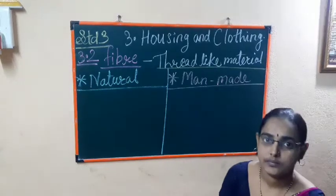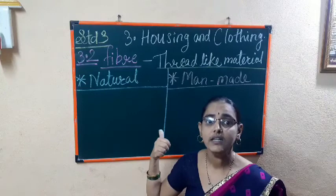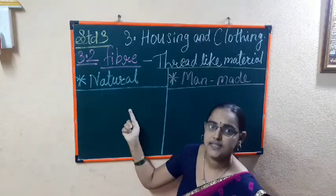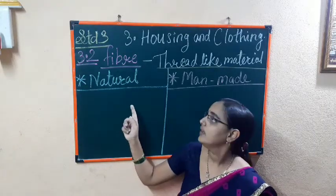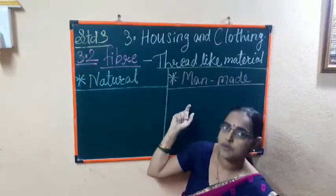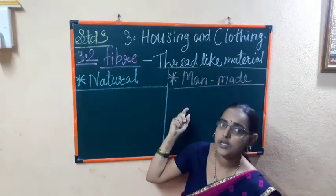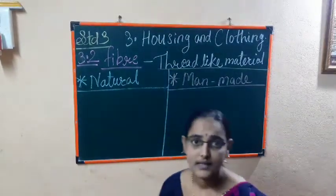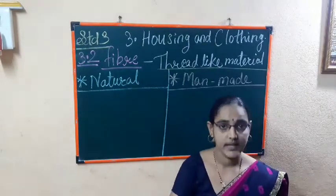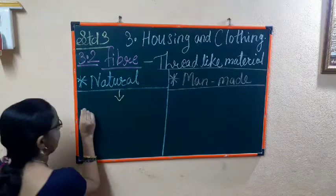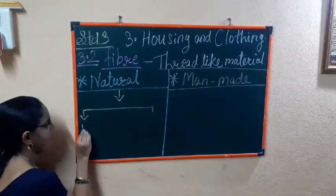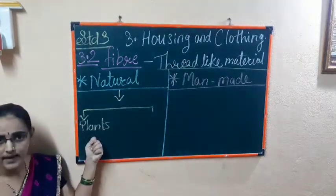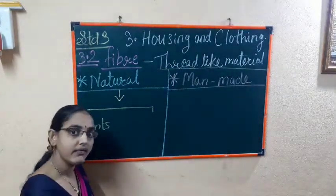Under natural fibers, there are two types: fibers obtained from plants, and fibers obtained from animals. Man-made fibers have no further types because they are made in a factory. So, natural fibers have two types — plant fibers and animal fibers.